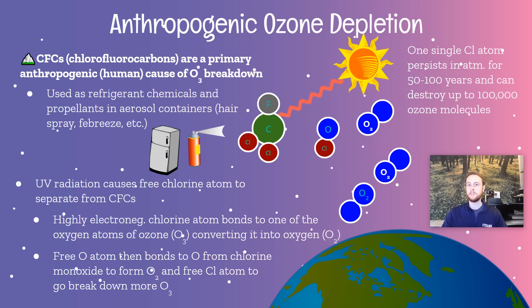This single chlorine atom, depending on how long it goes before it bonds with something else like NO2 or methane, can break down up to 100,000 molecules of ozone before it leaves this catalytic cycle by bonding with an NO2 or methane. So one single CFC molecule can be extremely damaging to the stratospheric ozone layer.